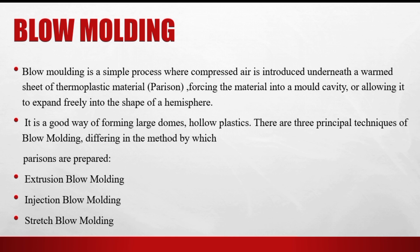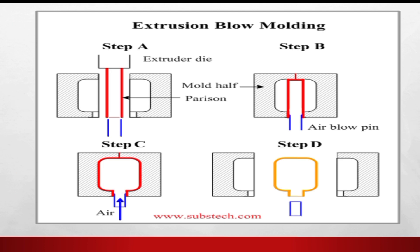We insert air pressure to blow the parison inside the mold. The process works by placing the parison between two molds, then closing the mold. Air is blown in with the help of a pin. In step D, we get the desired product.